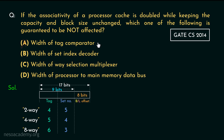Now coming to option B, it states that the width of the set index decoder will not be affected. Again a similar scenario — the set number field got decreased with the increasing number of ways. Therefore option B also cannot be the correct option.